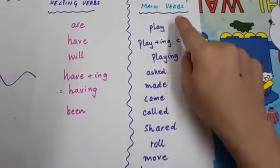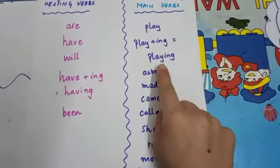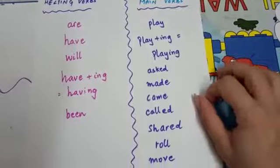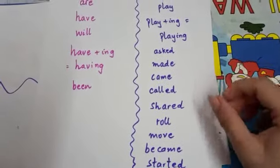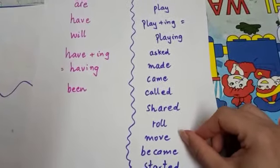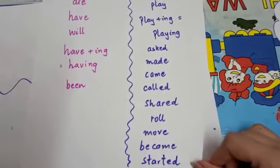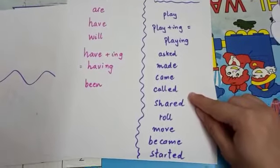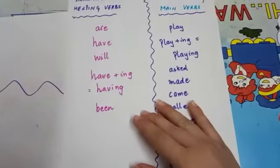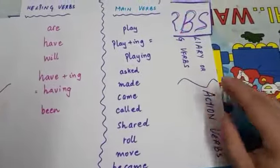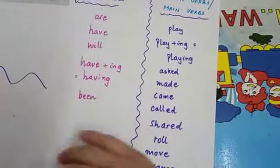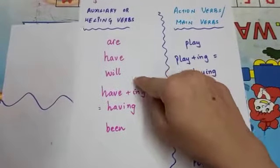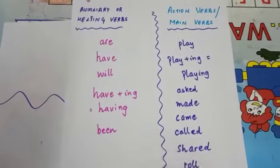Now let's look at the action verbs. These verbs told us about the action being done by the main subjects of our story — Rohan, Ram, and Priya — and these verbs helped them in completing their action.